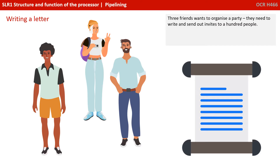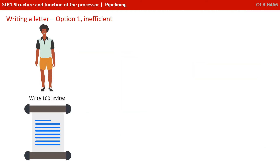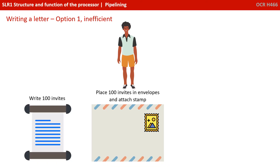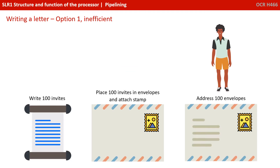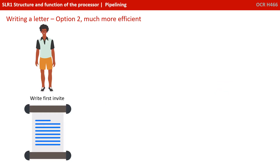There are three friends that want to organise a party, and they want to write and send out invites to 100 people. The first option is very inefficient: one person writes all 100 invites, then places them in envelopes and attaches the stamp, and then addresses all 100 envelopes.